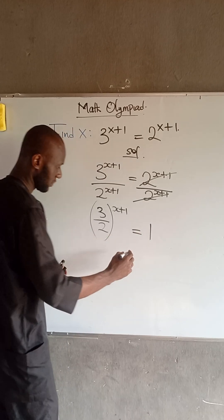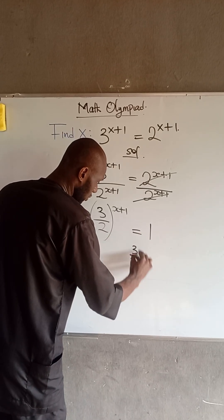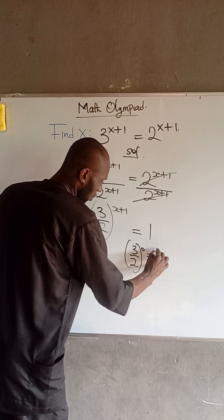Now, recall that 3 divided by 2 raised to the power of 0 is equal to 1.